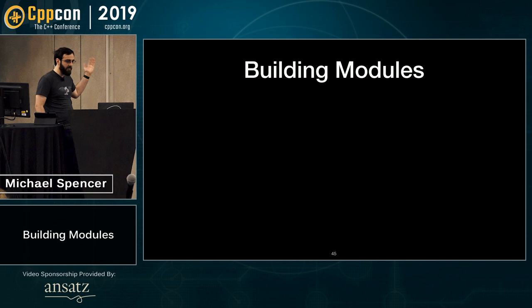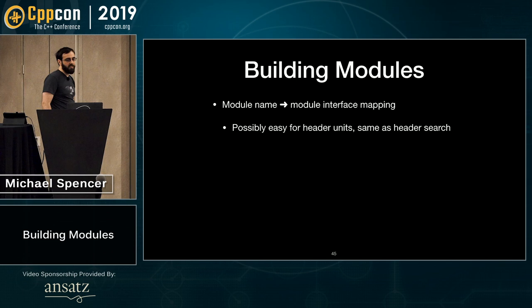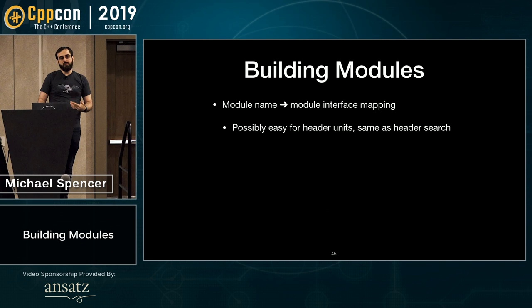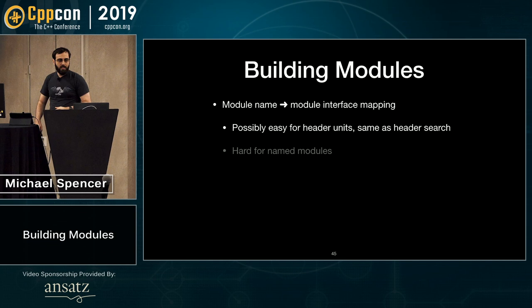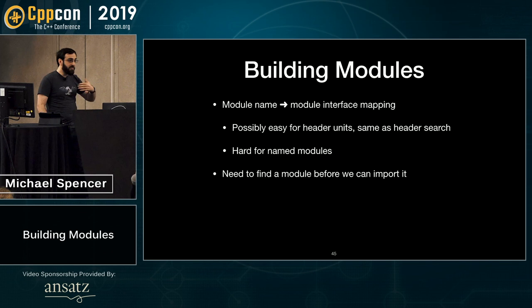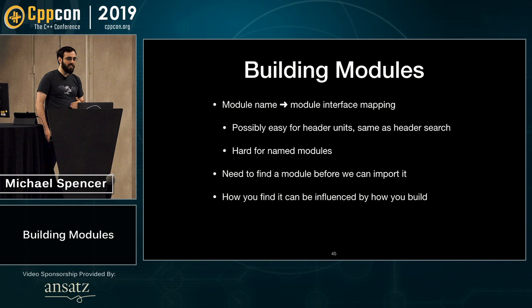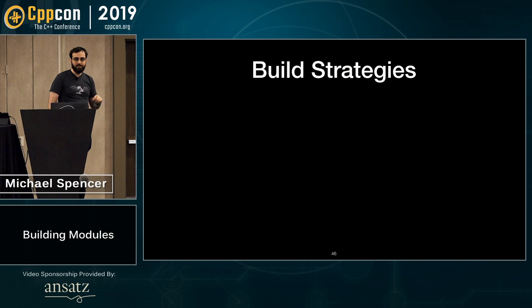When building modules, we have the dependency problem but also another problem: module name to module interface mapping. This is easy for header units — you just do header search, no coordination needed. But it's harder for named modules. We have to find a module interface before we can import it, and how you find it can be influenced by how you build.